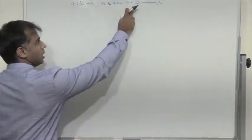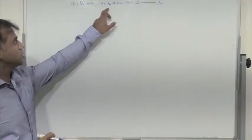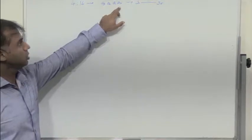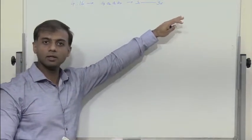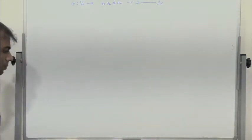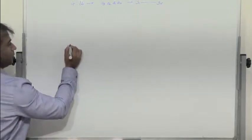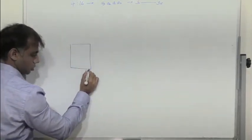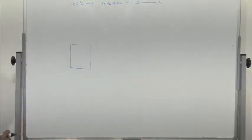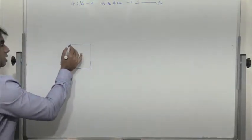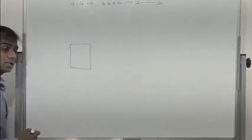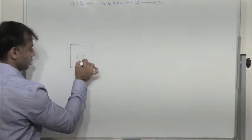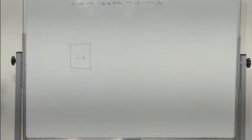When all inputs are 0, Y0 is 1. When we have 0,0,0,1, Y1 is 1. When we have 0,0,1,0, Y2 is 1, and so on. To build a 4-to-16 decoder, I will use 2-to-4 decoders with an enable input. When the enable input is 1, the decoder is enabled.